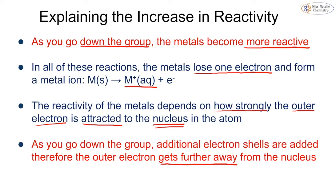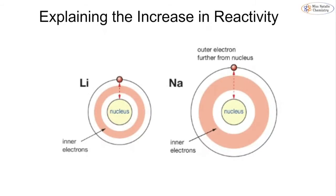So let's actually look at what that looks like. So if you have lithium, lithium has got the electronic configuration of 2-1. Compare that to sodium where you have 2-8-1. So this one has two shells, whereas sodium has three shells.